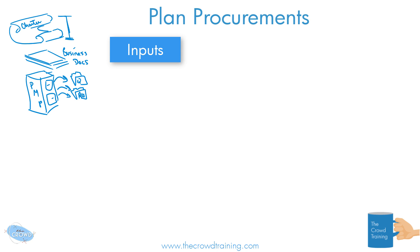As an input to help us plan our procurements, there are also various project documents. Those could be one of many things — like the requirements, what we are required to do; our risks, what we know could happen or not happen, and how likely we think they're going to happen. Lots of different project documents are very useful, because if we know we have to procure something, we use that information to help us figure out how to go about obtaining it.